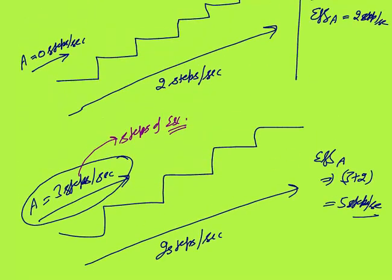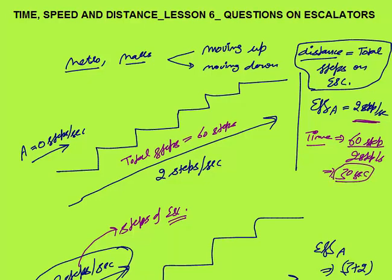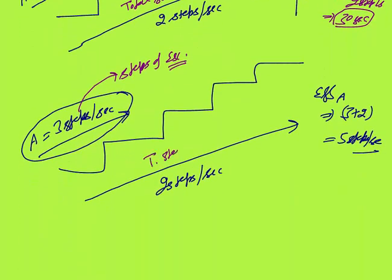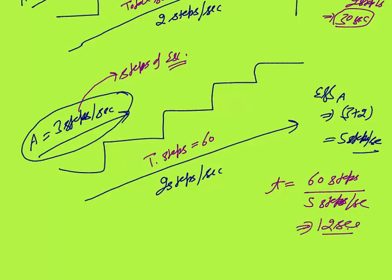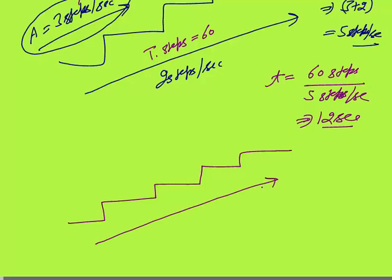Assuming total steps are 60: in the first case where A is just standing, time equals distance over speed, so 60 divided by 2 equals 30 seconds to reach the top. In the second case with the same 60 steps, the effective speed is five steps per second, so time equals 60 divided by 5, which is 12 seconds.